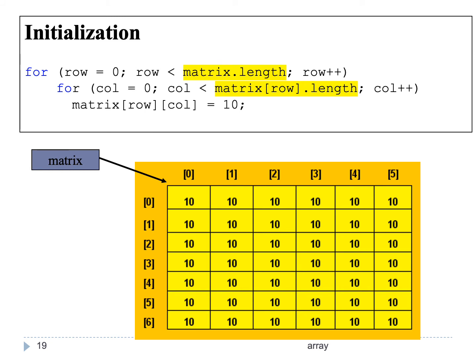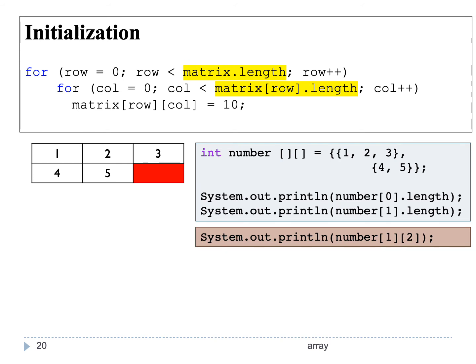Looking at this code, in the outer for loop we use matrix.length, which shows the number of rows, which is 7. Each row has several columns, so we write matrix[row].length. It is possible to have rows with different numbers of columns. For example, int[][] number equal to first row having values 1, 2, 3 and the second row having values 4 and 5.